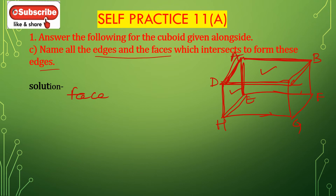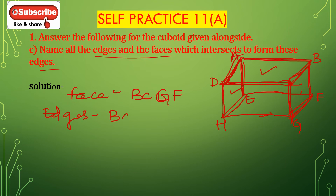Now intersecting face B, C, G, F. The edges are B, C; C, G; G, F and B, F. These are the edges BC, CG, GF and BF intersecting with the face BCGF.